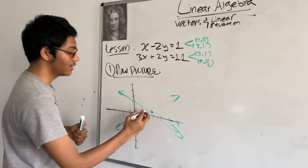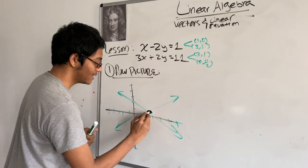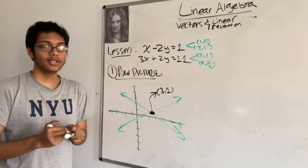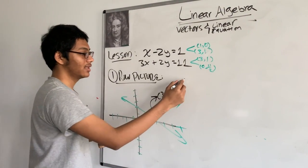So our two lines, and this is the most important point really, intersect at this point, which is 3 comma 1. And the whole point of solving linear equations is to find the point of intersection.